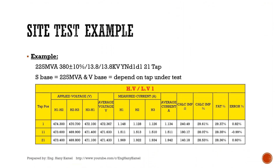This test will be performed for the maximum voltage tap, normal tap, and minimum voltage tap. All recorded values will be used to calculate the impedance at site for each related tap. Comparison will be done between site and factory values, and the error will be calculated. Care should be taken for the base power and voltage to make the right comparison.